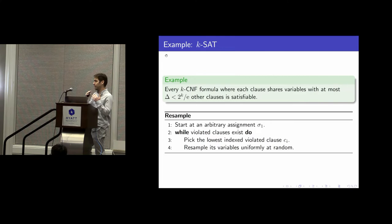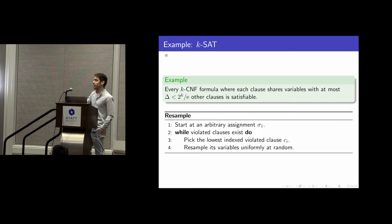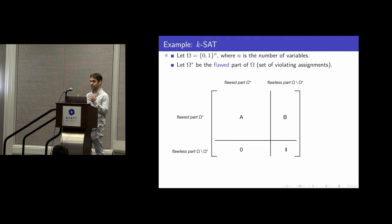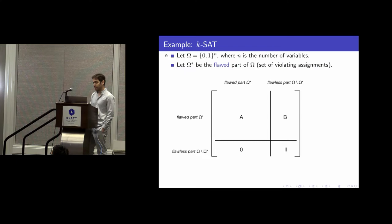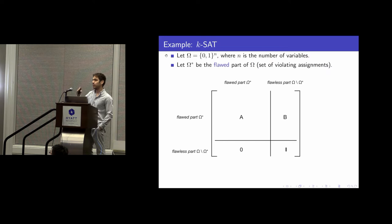So what is the algorithm? It starts from an arbitrary assignment, and then while violated clauses exist, it focuses on such a clause — say the lowest-index one — and resamples its variables uniformly at random, keeping doing that until, provably, it finds a solution in polynomial time. This is a Markov chain, so it has a transition matrix. Sub-matrix A is the sub-matrix of the transition matrix that governs transitions between the violating parts of the state space — specifically between violating configurations of the binary cube.